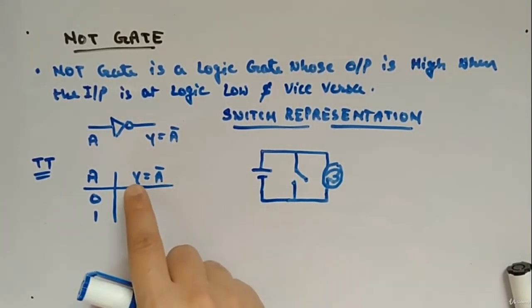This is how we represent it. So if A is the input and Y is the output, Y is equal to A-bar — that is how we represent the NOT gate output. This is the symbol: a triangle with a bubble. Truth table wise, if A is 0, then A-bar or Y is 1. If A is 1, Y which is A-bar will be equal to 0. So it's inverting — high will become low, low will become high. Simple.